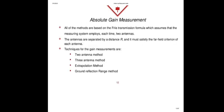We will come to the two antenna method. For absolute gain measurement, all of the methods are based on the Friis transmission equation, which assumes that the measuring system employs two antennas each time. The Friis transmission equation represents the communication link between the transmitting and receiving link. The variables are: PR is the received power, PT is the transmitted power, GT is the transmitting antenna gain, GR is the receiving antenna gain, lambda is the wavelength of the operating frequency, and R is the distance between the two antennas. The equation is: PR = PT × GT × GR × (lambda / 4πR)².